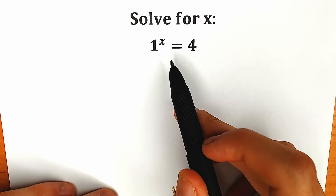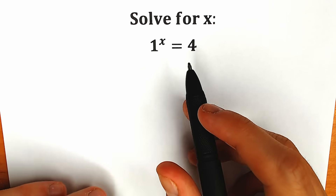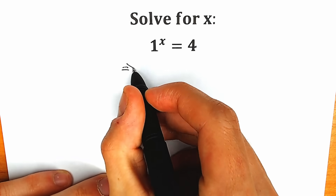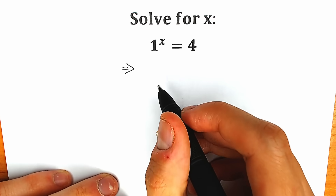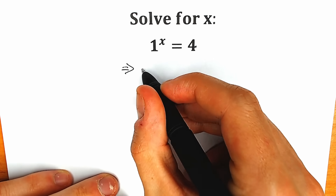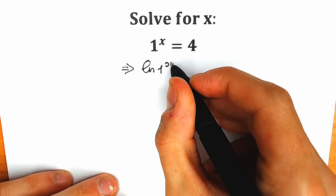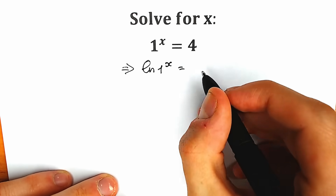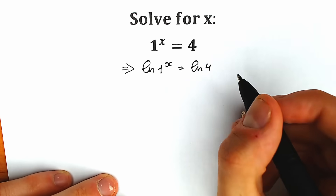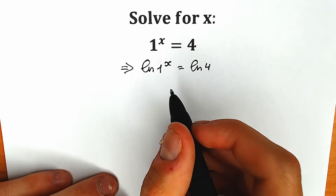1 to the power x equals 4. A lot of students might be thinking this is not possible. For example, when we apply natural log from both sides — natural log on the left side of 1 to the power x, and on the right side natural log of 4. So we apply natural log from both sides, and this is a correct way to do this.